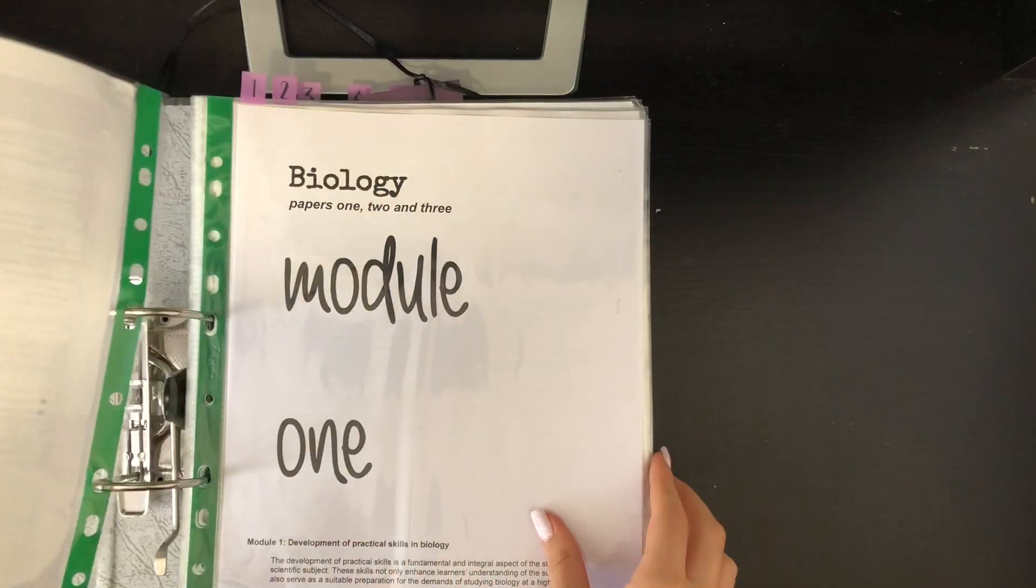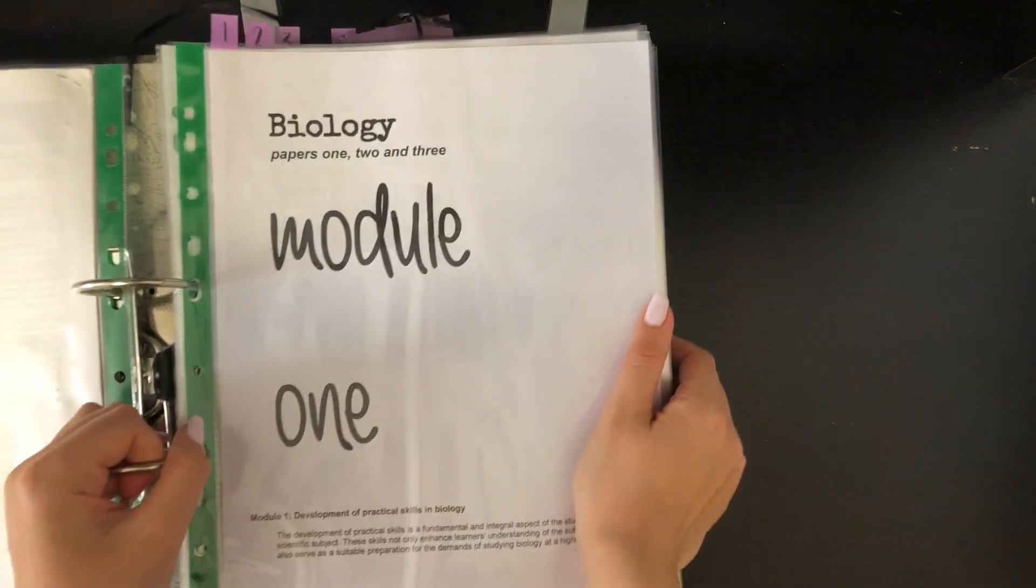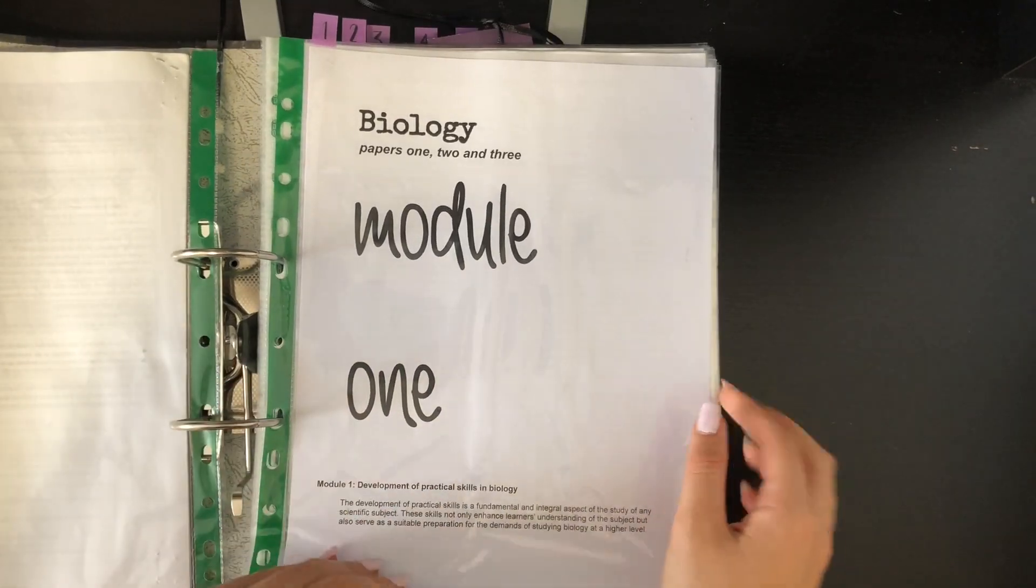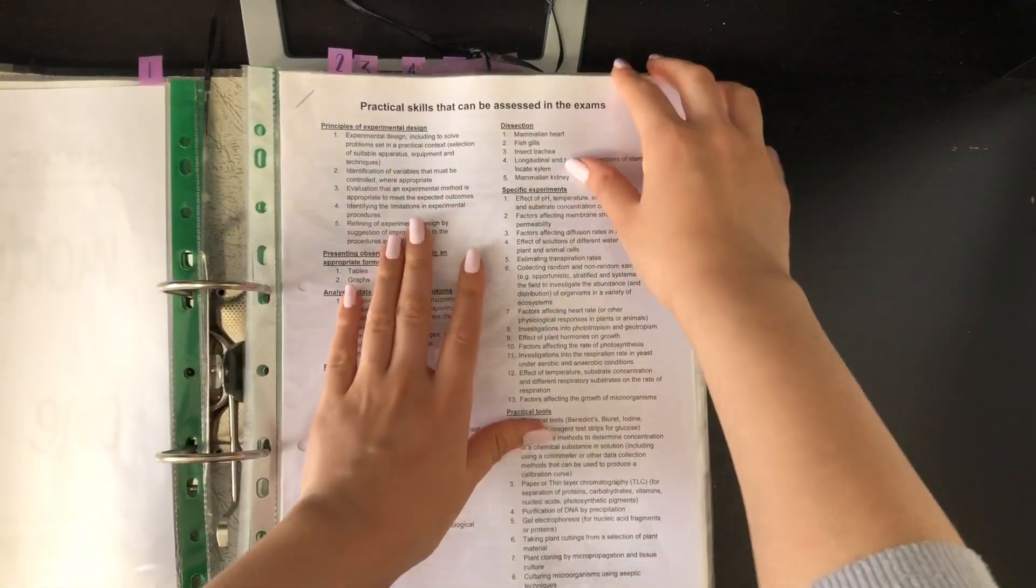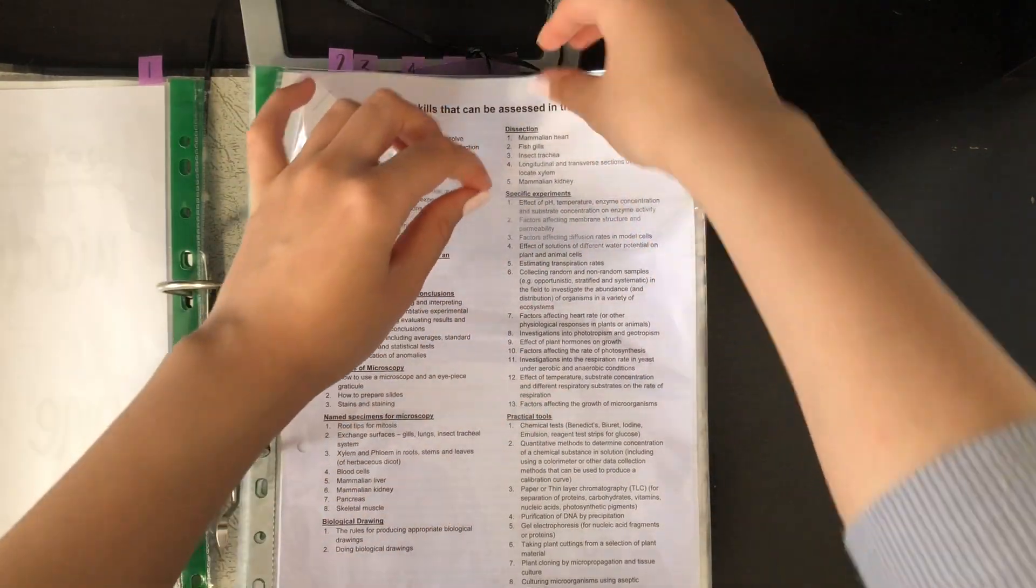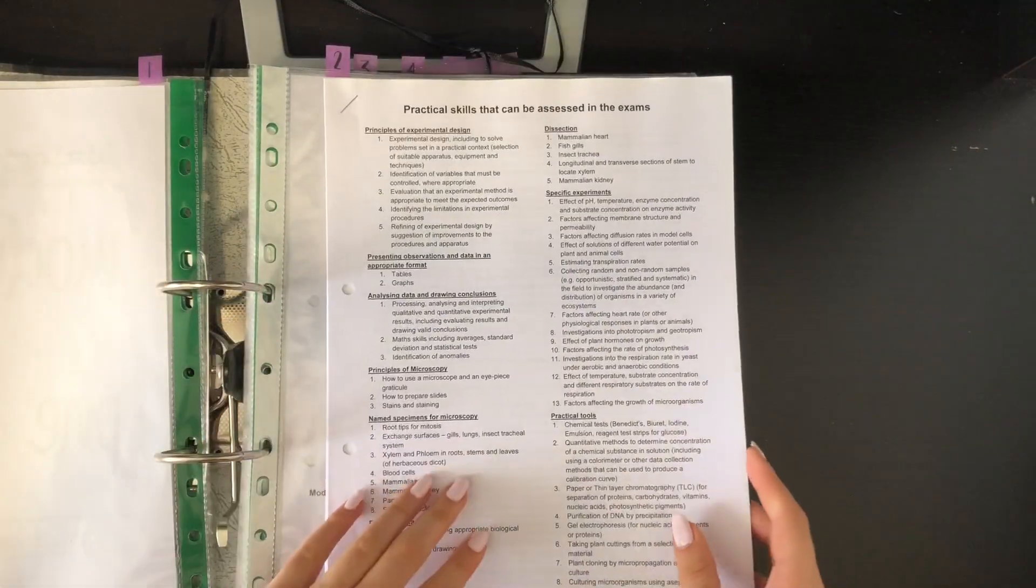So I made these little page dividers with sticky notes at the top to find the modules quicker in this arch file. It just has a little summary of what that module is about, and which paper it belongs to. So module one is basically just a practical based module, and it just talks about everything you will need to know for the endorsement.